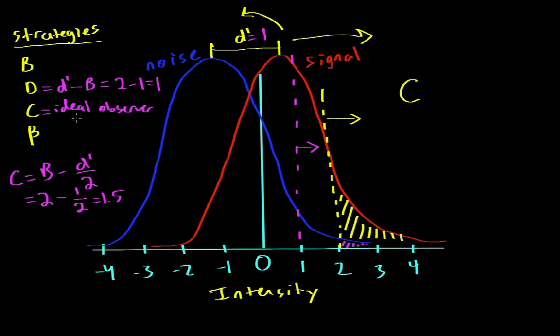So if you were using a C strategy, that of an ideal observer, then we would say anything above 1.5 would get a yes. Anything below would get a no.